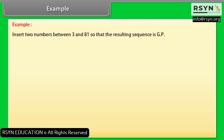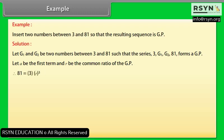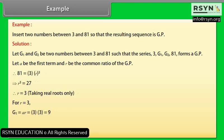Example: Insert two numbers between 3 and 81 so that the resulting sequence is a GP. Solution: Let G1 and G2 be two numbers between 3 and 81 such that 3, G1, G2, 81 forms a GP. So 81 = 3×R³, which gives R³ = 27, therefore R = 3. For R = 3: G1 = 3×3 = 9, G2 = 3×3² = 27. Thus, the required two numbers are 9 and 27.